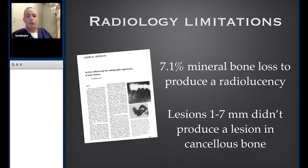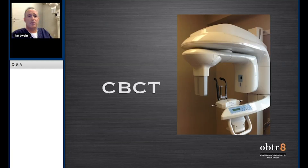Seven percent mineral bone loss is needed to produce a radiolucency, and lesions need to be a certain size. One to seven millimeters didn't produce a lesion in the cancellous bone in the Bender study. So is there a way we can do better? Cone beam certainly can be advantageous.